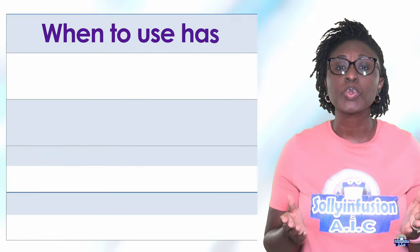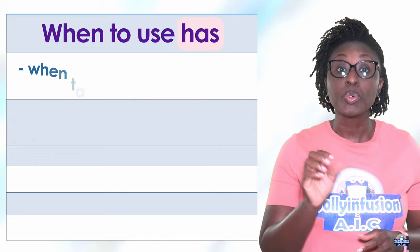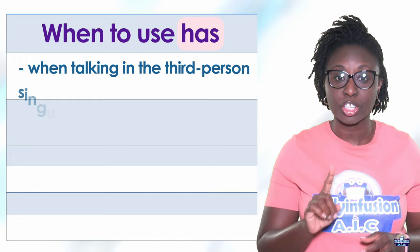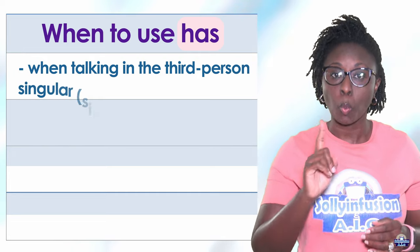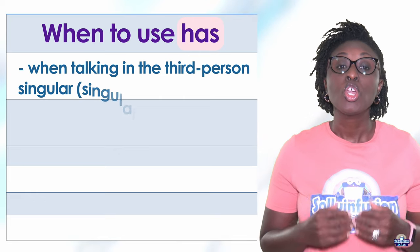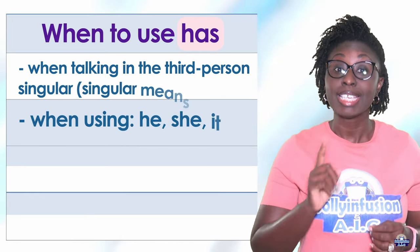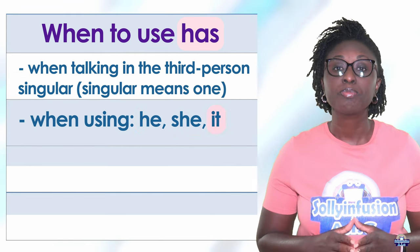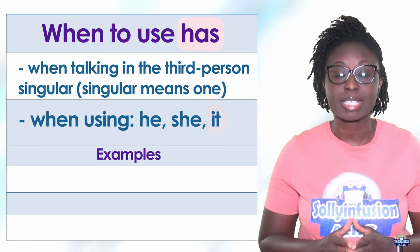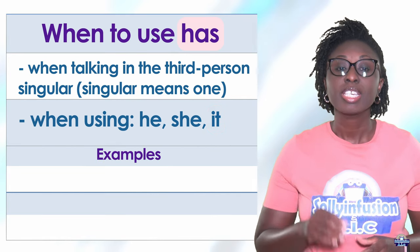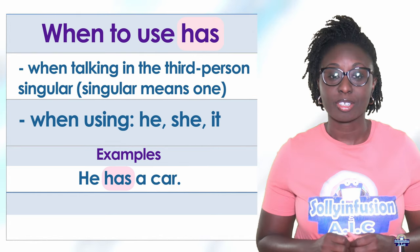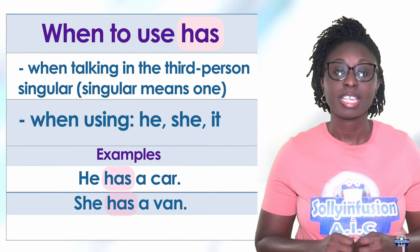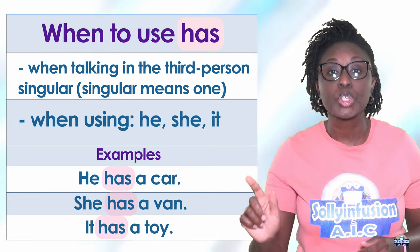When to use has: use has when talking in the third person singular. Singular means one. Use has when using he, she, or it. Let's look at some examples. He has a car. She has a van. It has a toy.